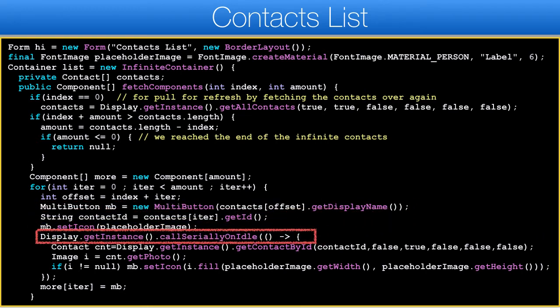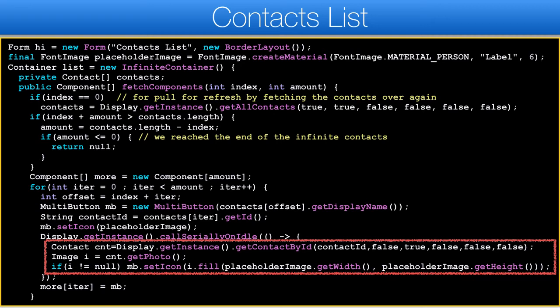However, you might recall we didn't fetch the image for the contact, and that might be pretty expensive to load. The trick is to call the image-fetch method on a button-by-button basis, but we don't invoke it directly as it would kill performance. For this we use the new callSeriallyOnIdle method. This works like callSerially by performing the code in the next event dispatch thread cycle, but the code will only occur when the phone is idle and there are no other urgent events. So when idle, we ask for the contact's image using the specific API and then fill up the UI. Since this is an infinite list, this will only be invoked for the number of entries per cycle, meaning it should be reasonably efficient.